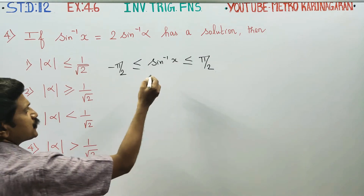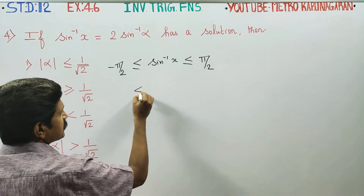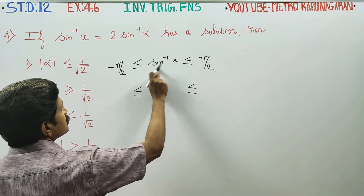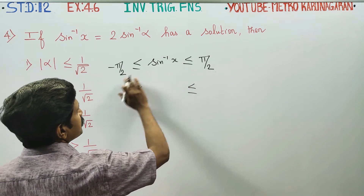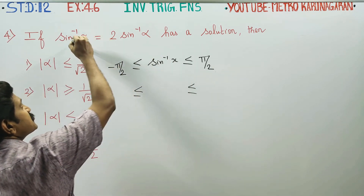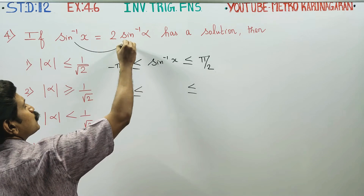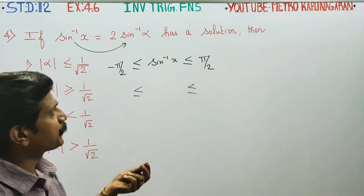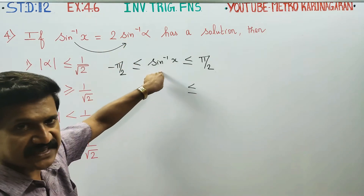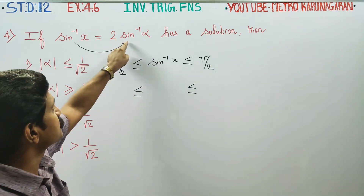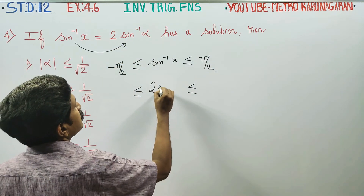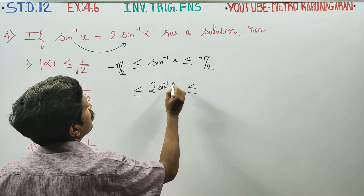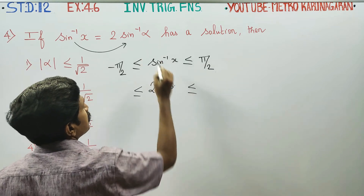Using this information, we will start the sum. Now, for the range of sin inverse x: since sin inverse x equals 2 times sin inverse alpha, instead of sin inverse x, you should substitute 2 times sin inverse of alpha.